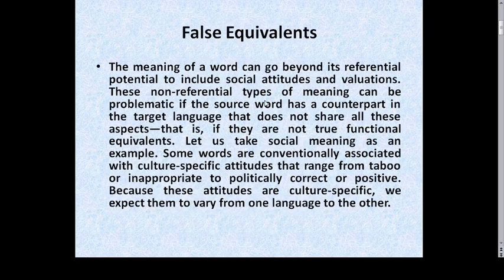We are going to discuss the first translation problem of the second lecture: false equivalents. The meaning of a word can go beyond its referential potential to include social attitudes and evaluations. These non-referential types of meaning can be problematic if the source word has a counterpart in the target language that doesn't share all these aspects — that is, if they are not true functional equivalents.